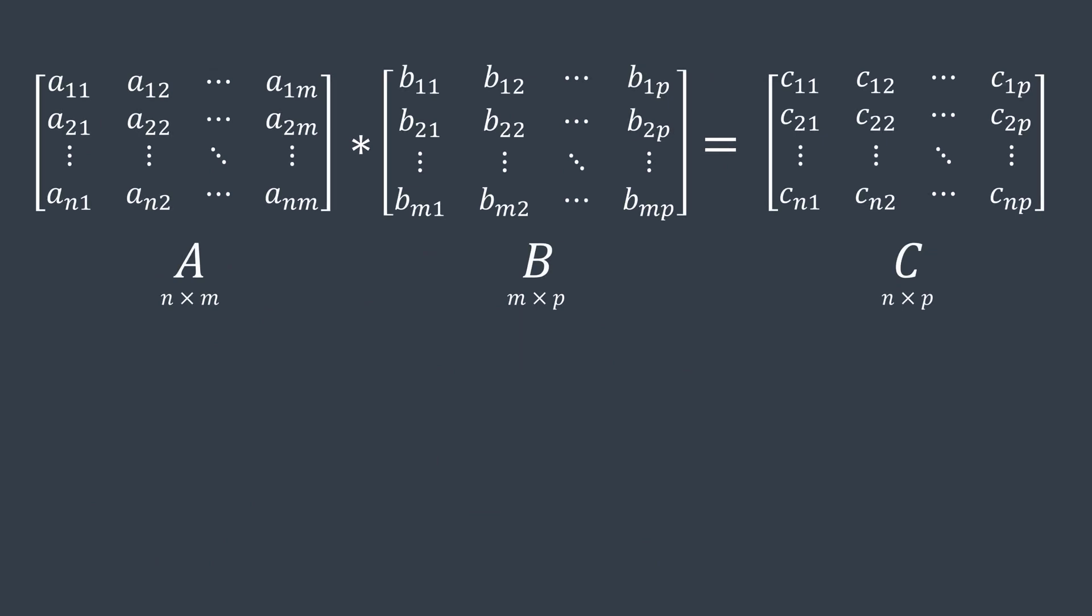To multiply two matrices A and B, for each element of the row i column j, we do the sum of the first element of row i of A times the first element of column j of B, plus the second element of row i of A times the second element of column j of B, and so on. So c_ij is the sum of a_ik times b_kj, where k goes from one to m.